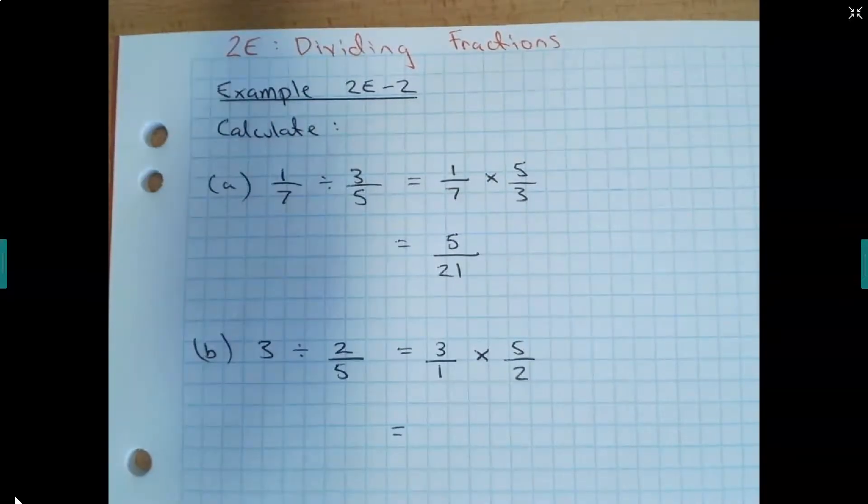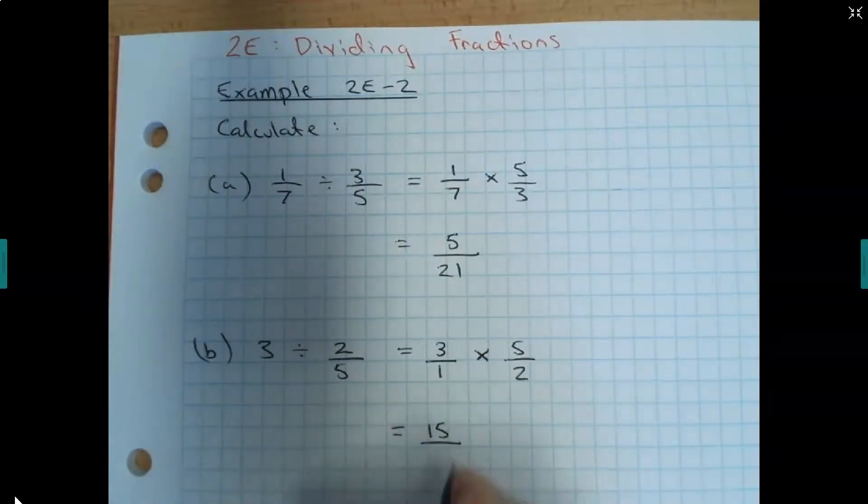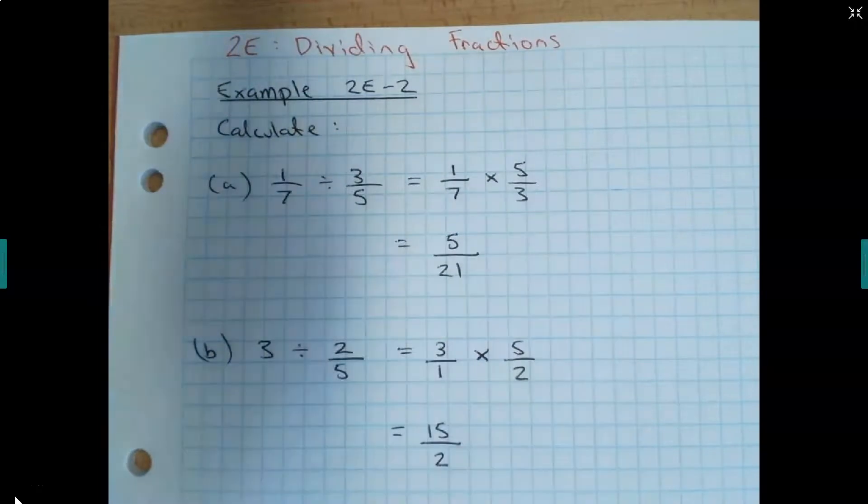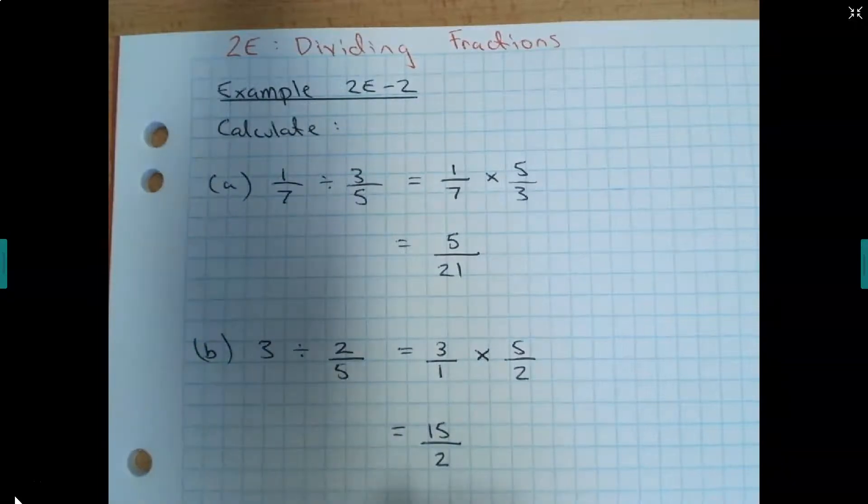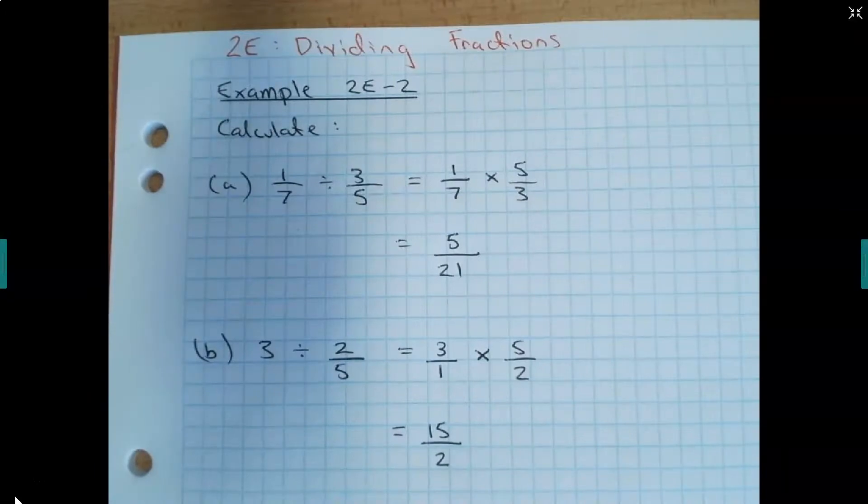Okay, so then it's a matter of just multiplying our top numbers, or our numerators. 15 over 2. Now, I'm going to change this to a mixed number for a specific reason. So, 2 goes into 15 how many times? With how many left over? 1. Over 2. So, what this is saying is 2 fifths fits into 3 seven and a half times. Alright, just like any division problem that we normally do if we want to know how many times a number fits into another.